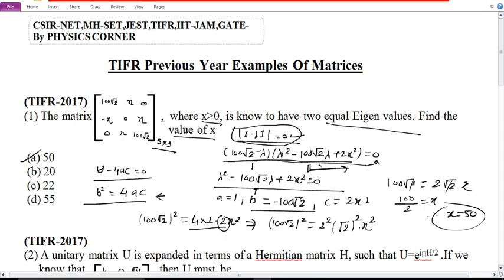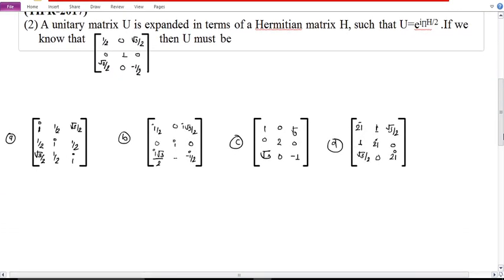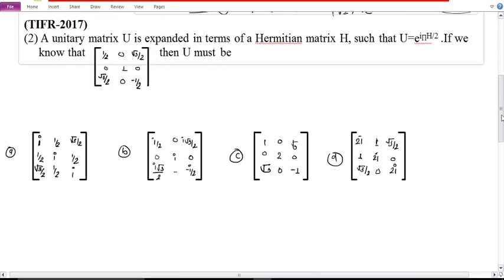Therefore x equals 50. That's why the first option is correct. So see, it was simple. You just had to use the characteristic equation. Then put this equals 0. You get the quadratic equation, and you know how to find roots. Use b square minus 4ac. When b square minus 4ac equals 0, you get equal roots, so b square equals 4ac. You find x. This was an easy problem asked in TIFR 2017.